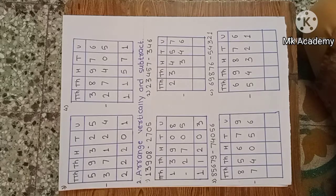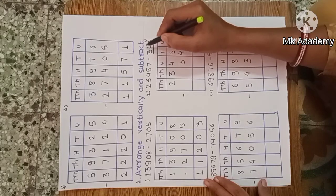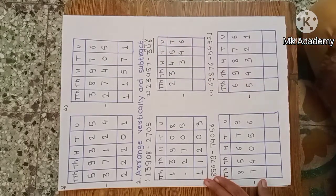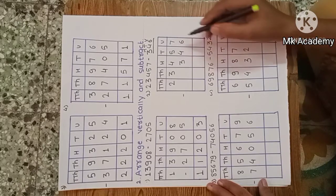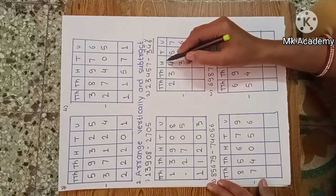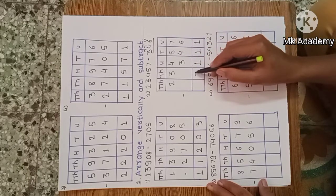Second example: twenty-three thousand four hundred fifty-seven minus three hundred and forty-six. Remember: 346 is a three-digit number — the 6 is at the unit place, 4 is at the tens place, and 3 is at the hundreds place. Write this properly in vertical arrangement, then subtract. Unit: 7 minus 6, one. Tens: 5 minus 4, one. Hundreds: 4 minus 3, one. Thousands: nothing to subtract, write 3 as is. Ten thousands: 2 as is. The answer is twenty-three thousand one hundred and eleven.